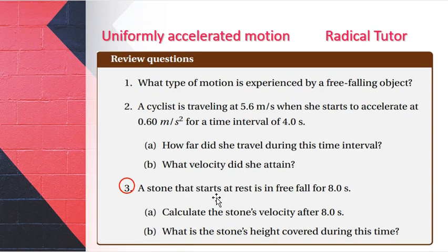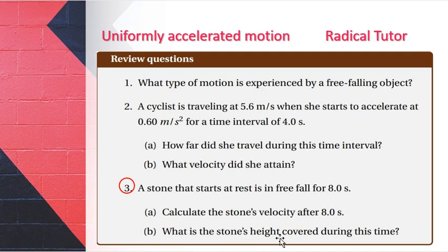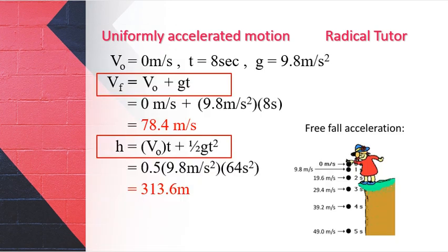Question number three: A stone starts at rest on the ground and is in free fall for eight seconds. Given: initial velocity is zero, acceleration due to gravity is 9.8 meters per second squared, time is eight seconds. Calculate the stone's final velocity after eight seconds, and what is the distance covered during this time.